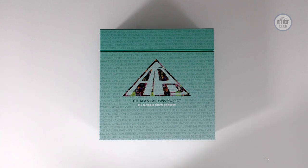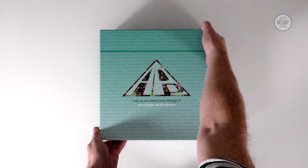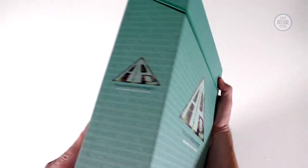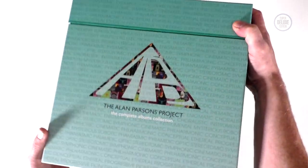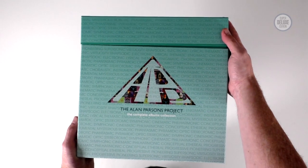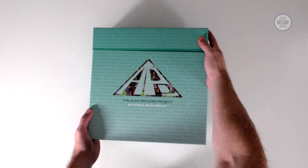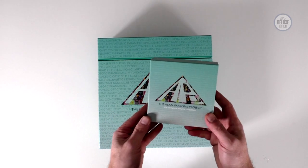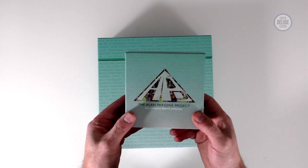So we've got 11 vinyl records, they're all half speed mastered and they come in this pretty heavy box set as you might imagine. This is very consistent with the CD box. So if I put this down for a second, remind you that's what the CD box looked like. That came out in 2014.